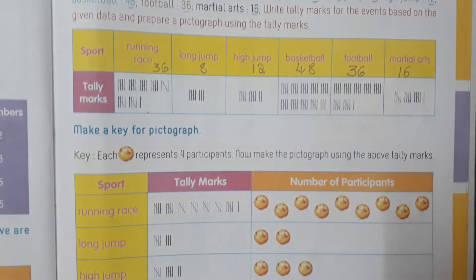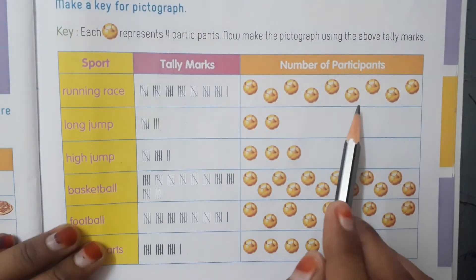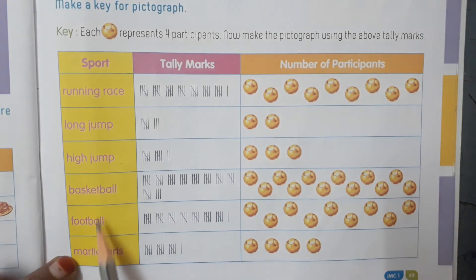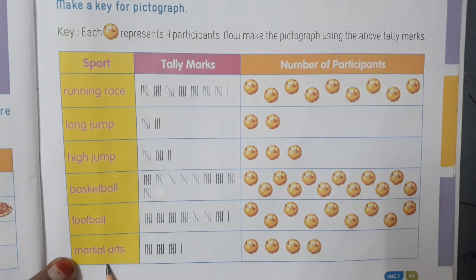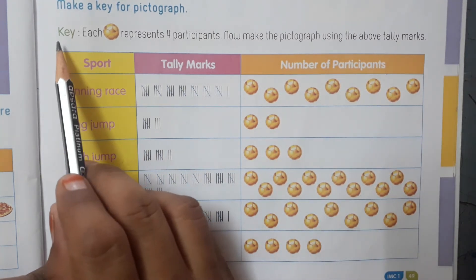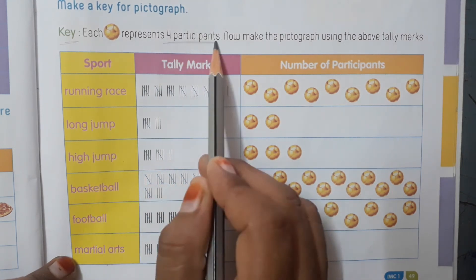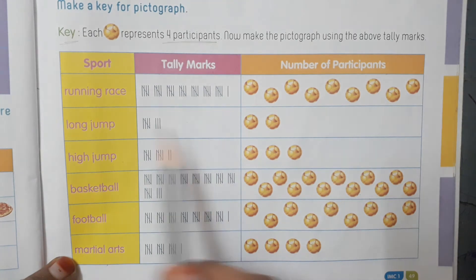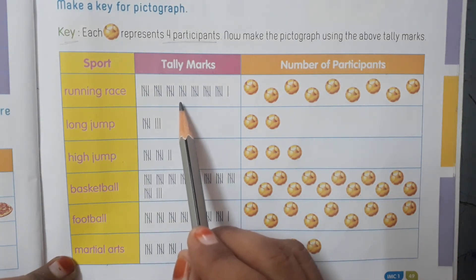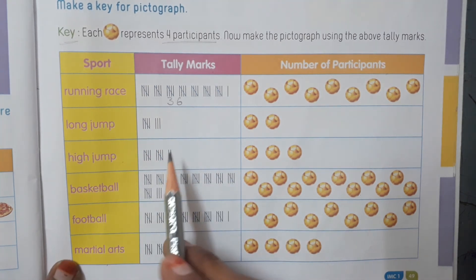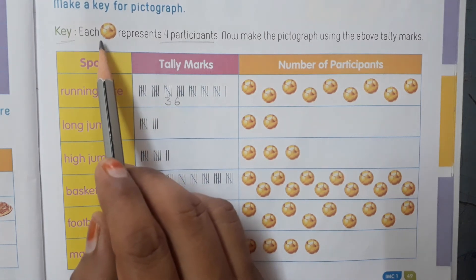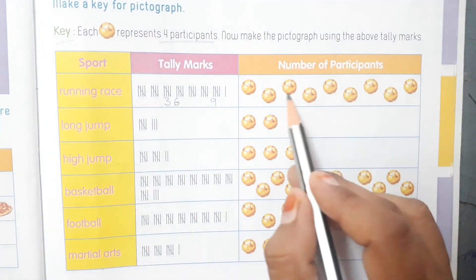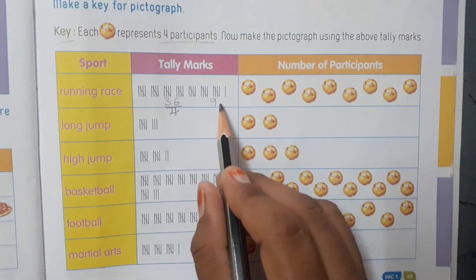They used a ball symbol for the pictures. The pictograph has a title, types of sports on the left, pictures on the right, and a key — each ball represents four participants. For running race, thirty-six divided by four equals nine ball pictures. We divide by four because each ball represents four participants.